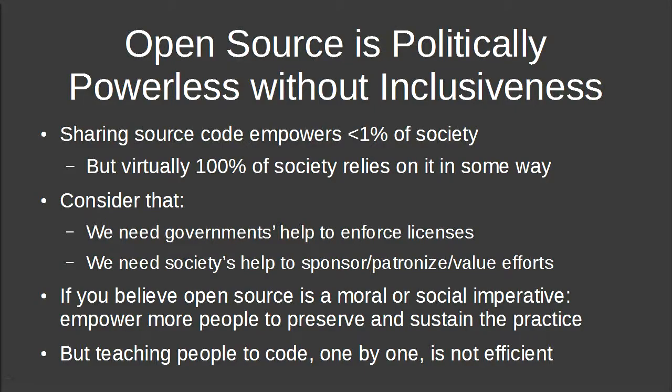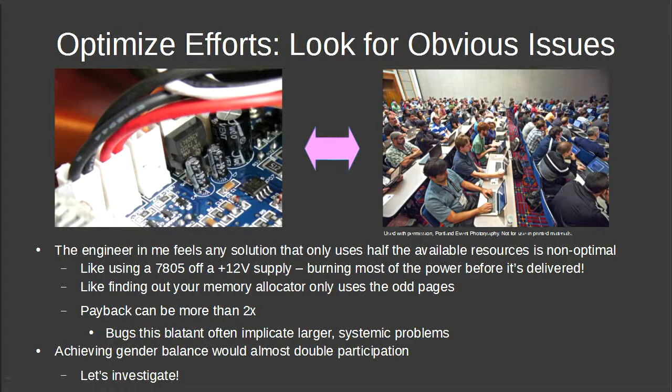Open source is politically powerless without inclusiveness. Sharing source code actually empowers a very small portion of society, yet virtually 100% of the world relies on code written by people in this room. We need governments to enforce licenses and society to sponsor efforts. If you believe open source is a moral or social imperative, we should spend time trying to empower more people. But teaching people to code one by one is not efficient.